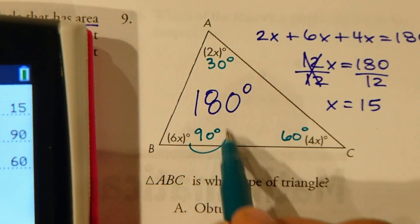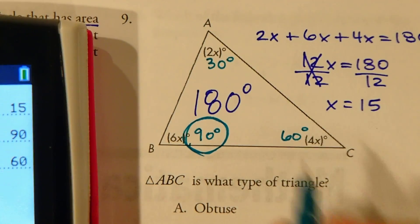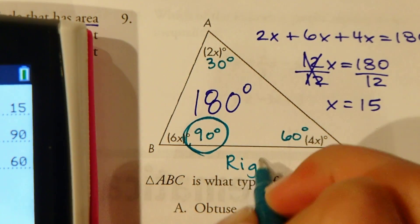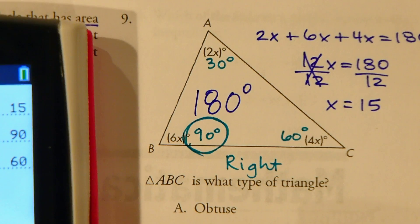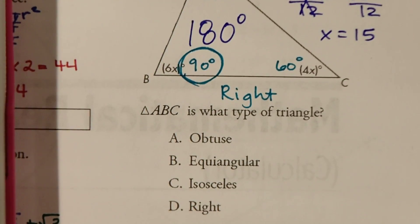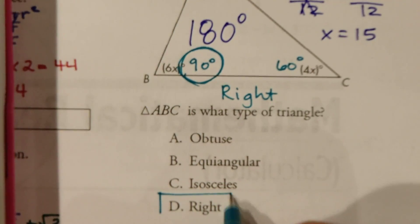So this is very important right here. If we have a 90 degree angle inside a triangle, that automatically means it's a right triangle. That is the definition of a right triangle. So for our answer options, if we scroll down a little bit, we can see that it's going to be right.